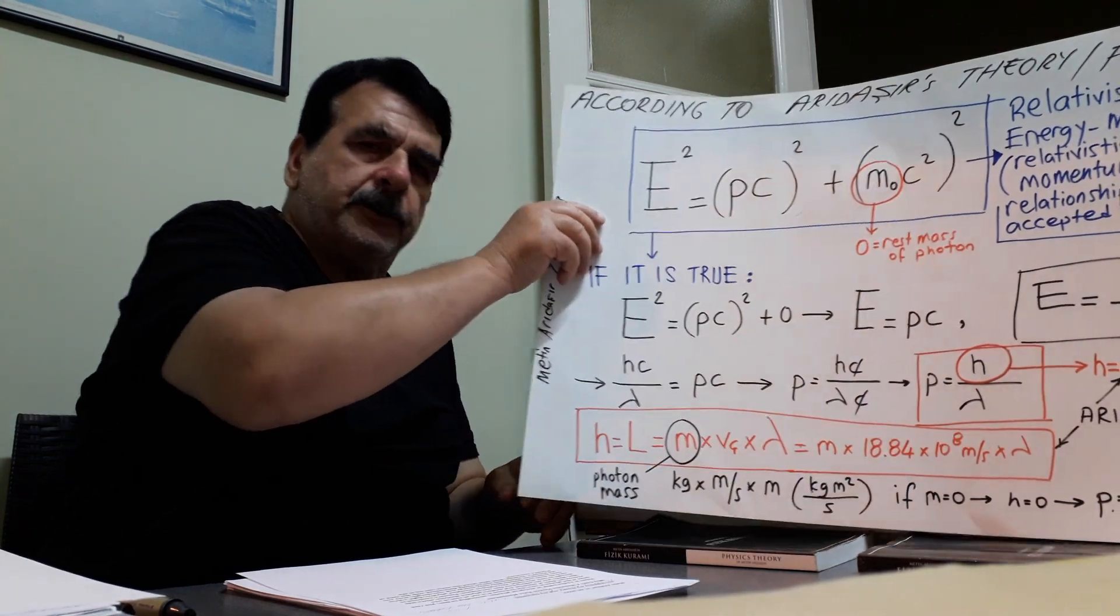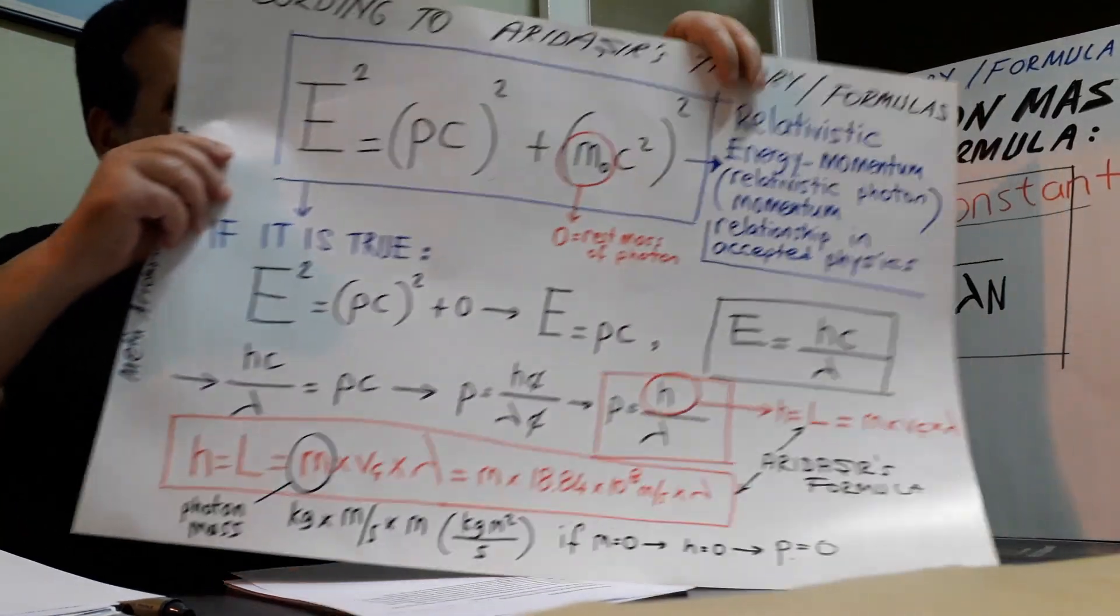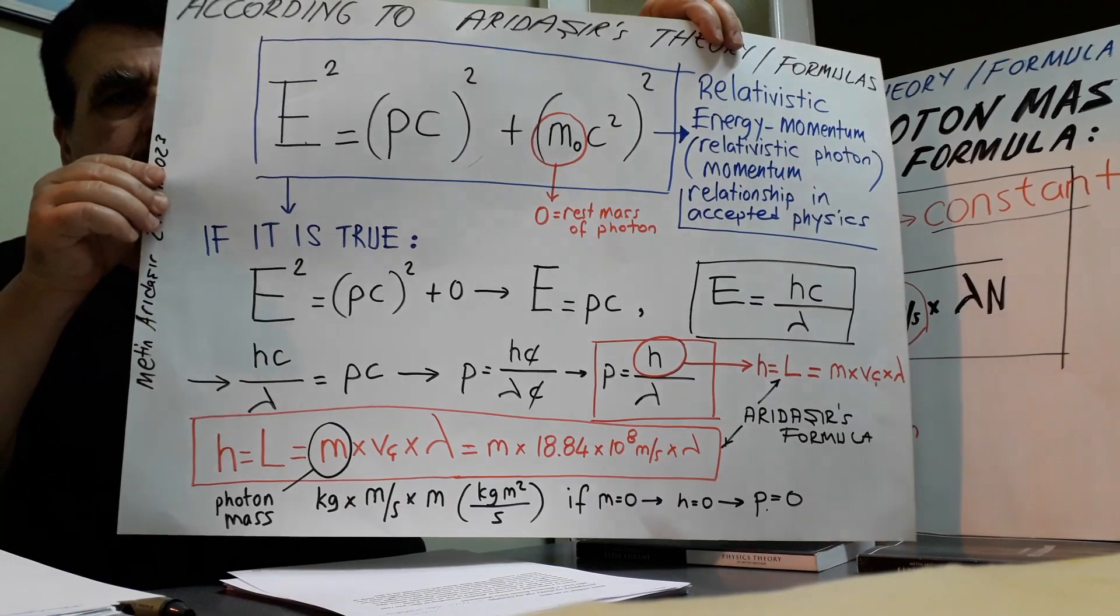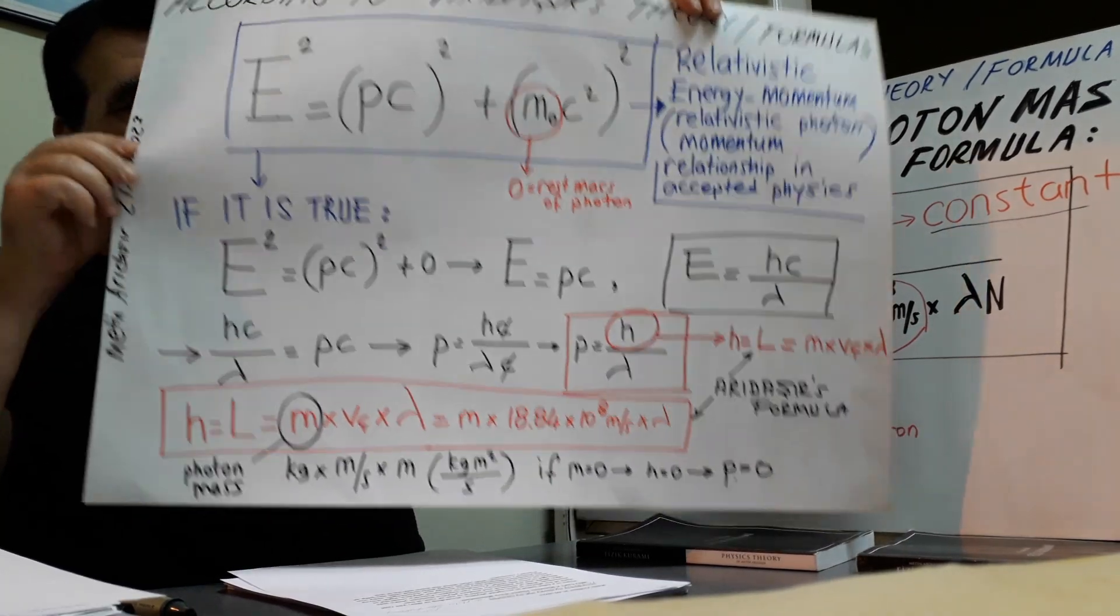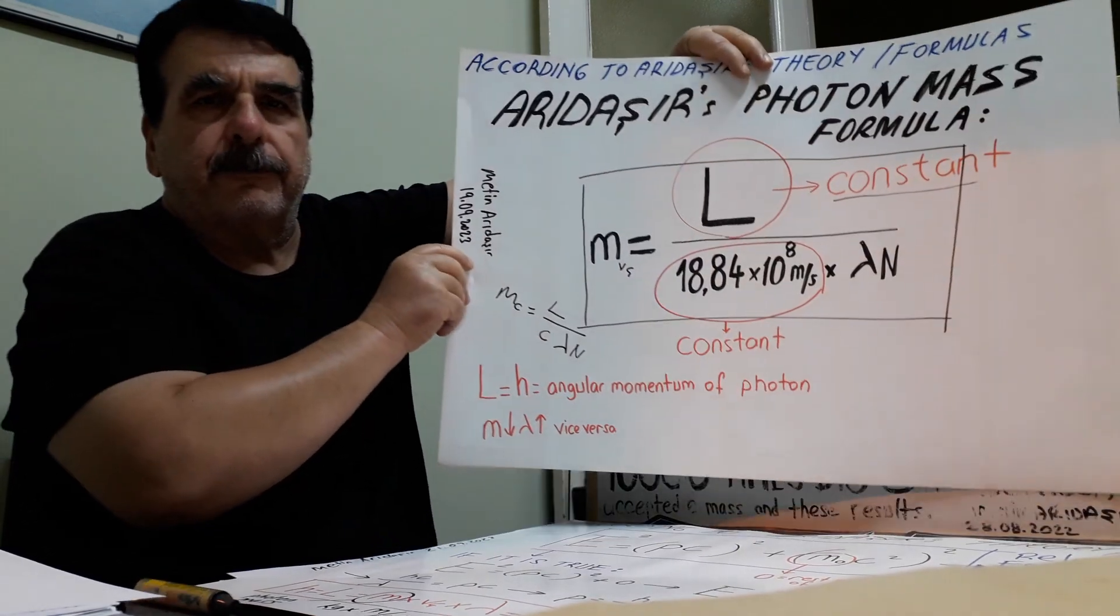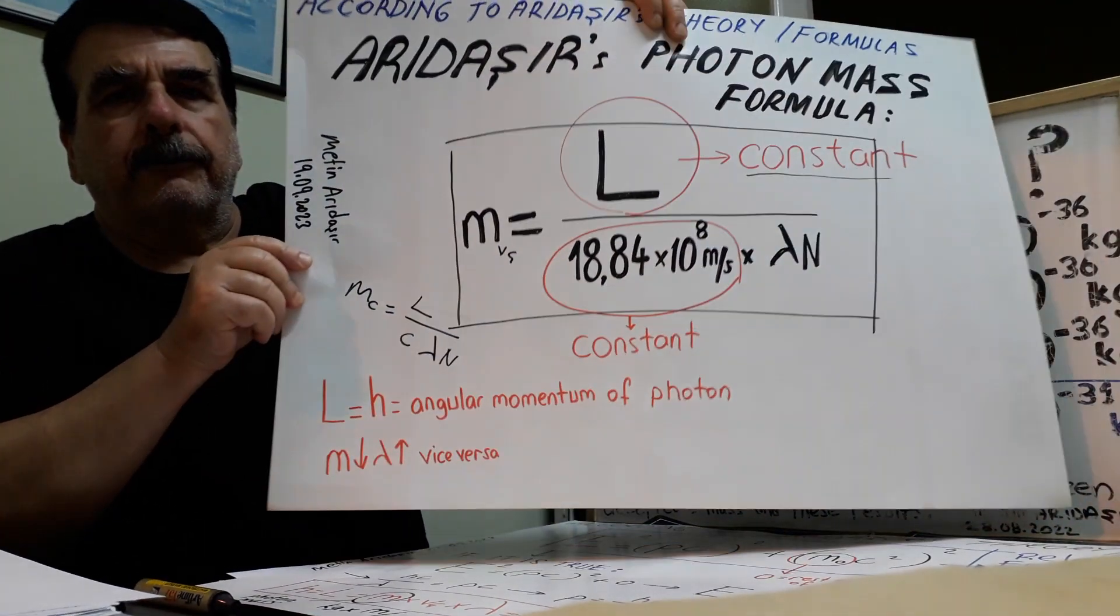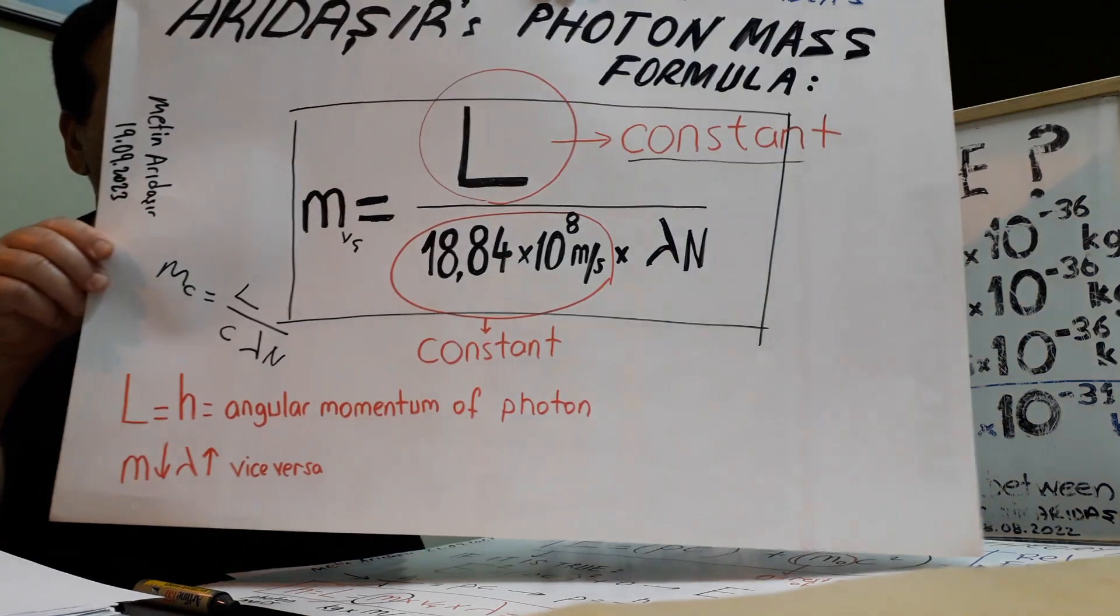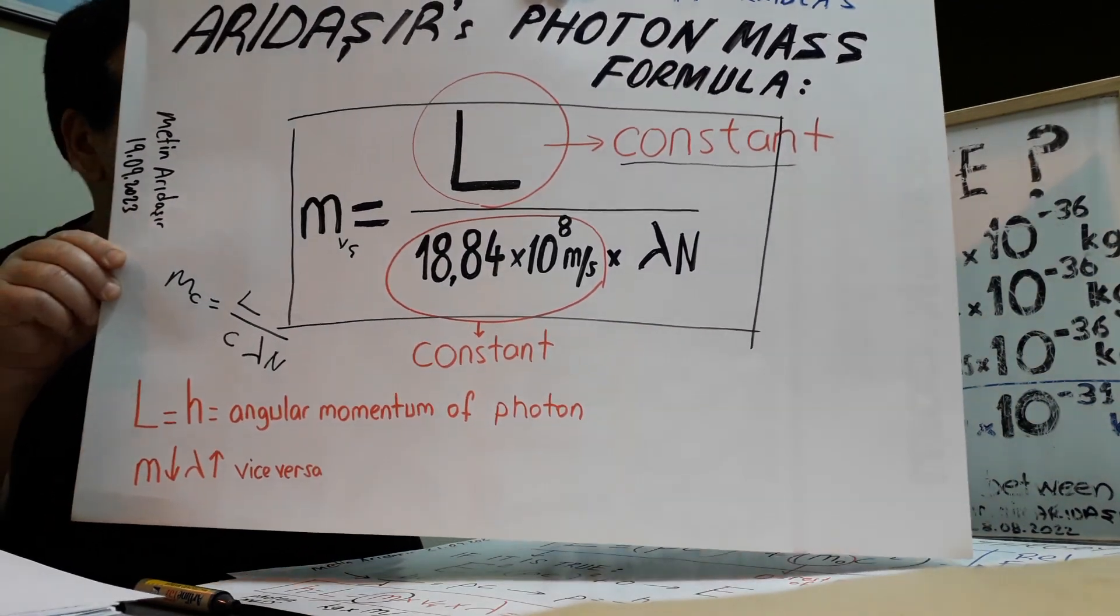I advise you to notice. Snapshot again. And this is my mass of photon, photon mass formula.